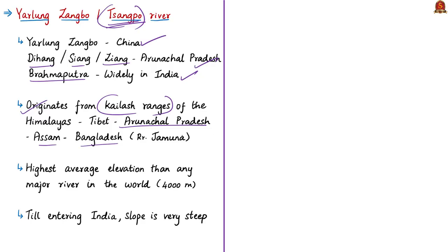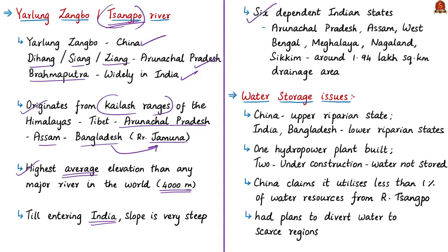The Yarlung Tsangpo River has the highest average elevation of any major river in the world — around 4,000 meters in its Chinese stretch. The slope is very steep until it enters India, where it is heavily moderated. Six Indian states are dependent on the Brahmaputra: Arunachal Pradesh, Assam, West Bengal, Meghalaya, Nagaland, and Sikkim. The total drainage area in India based on Brahmaputra is approximately 1.94 lakh square kilometers, around 6% of India's total geographical area.